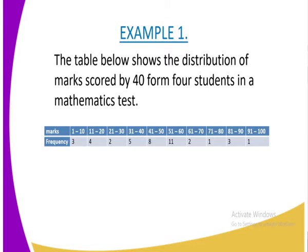Let us look at the following example 1. The table below shows the distribution of marks scored by 40 Form 4 students in a mathematics test. We have the marks and the frequency. As you can see, we have the classes. Our first class is from 1 to 10, and the number of students who scored those marks is 3.